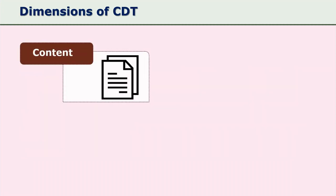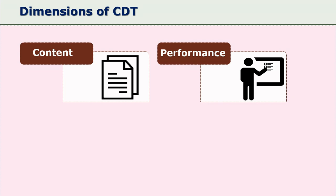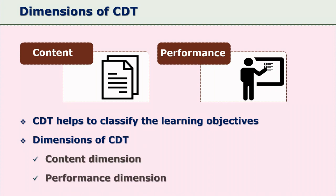CDT, or Component Display Theory, suggests two dimensions: one is the content dimension and another is the performance dimension. Based on these two dimensions, teachers can decide what kind of learning objectives to set, what strategies to use so that those objectives are met, and what kinds of test items to design to measure learning.